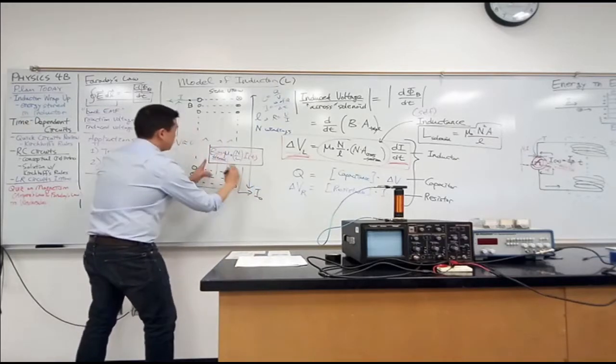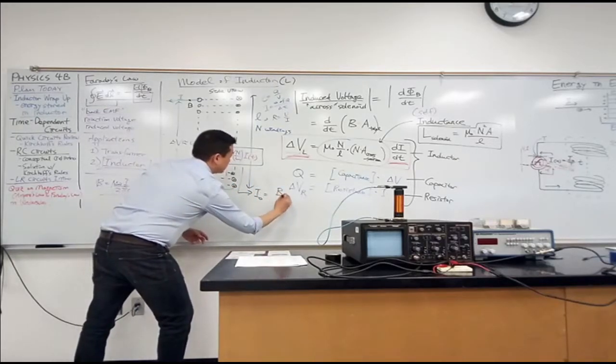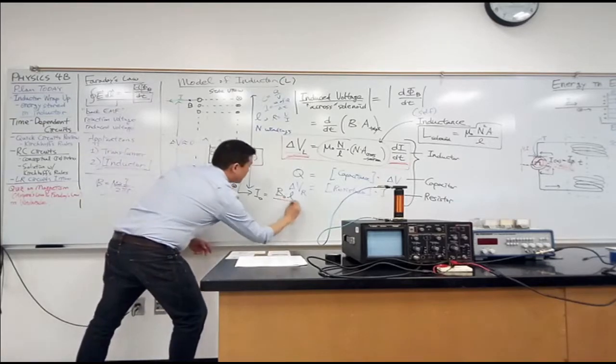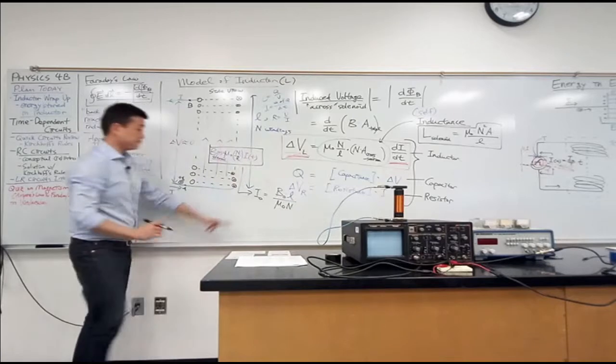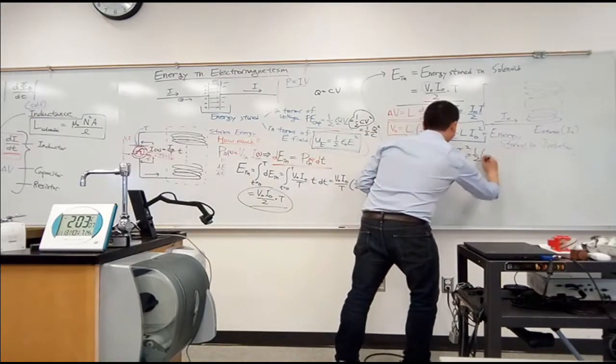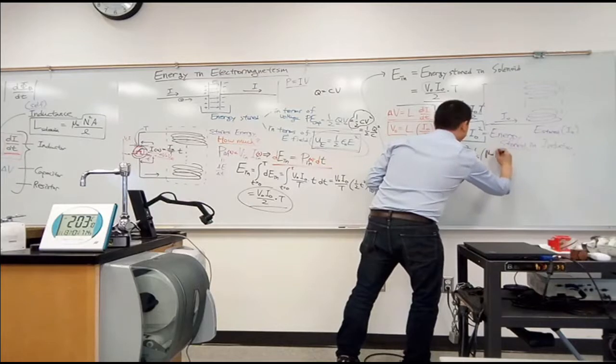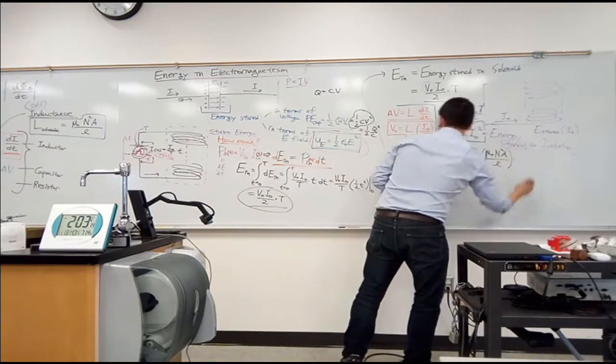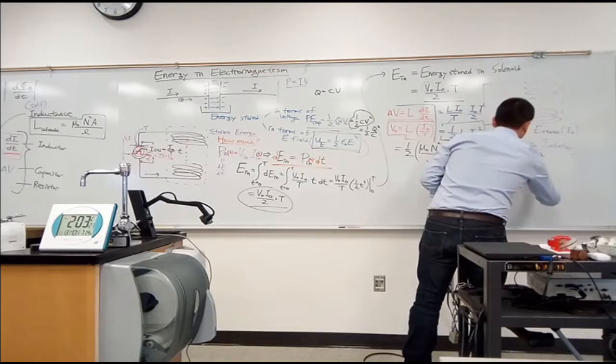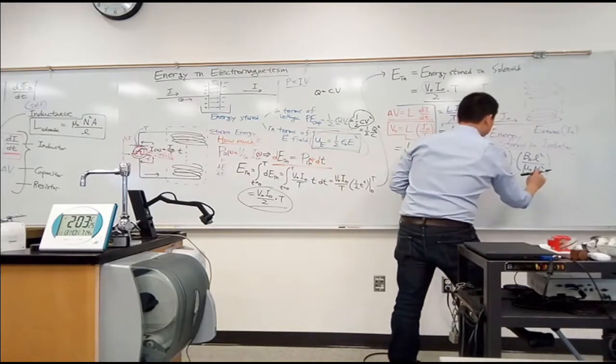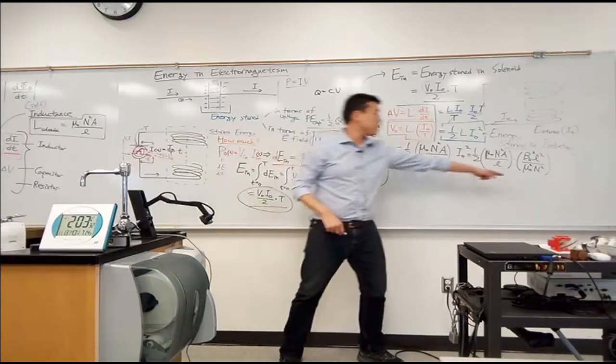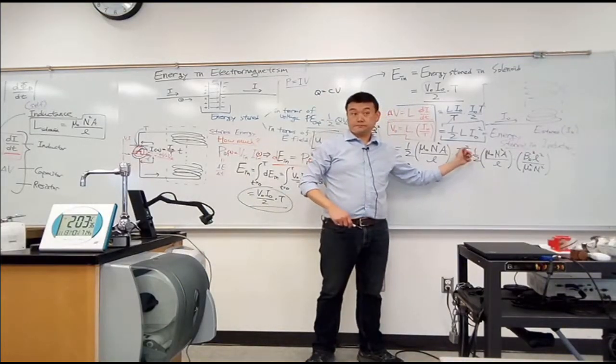Solving this for current, I-naught, it's going to be the magnetic field B-naught times L divided by mu-naught n, right? Let me plug this in there and let's see what happens. So this is equal to one-half mu-naught n squared A over L times all of that squared. So B-naught L squared over mu-naught n squared. Sorry, I have to square each one of these.